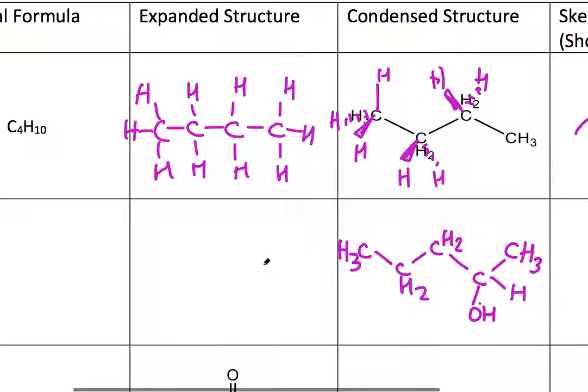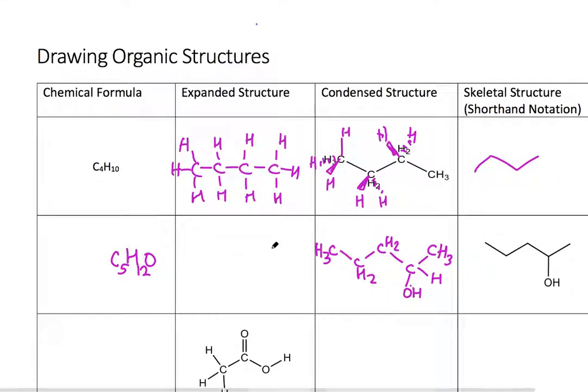And the chemical formula is C. We go in alphabetical order usually, so C, then H, then O. And then there's 1, 2, 3, 4, 5 C's, 1, 2, 3, 4, 5, 6, 7, 8, 9, 10, 11, 12 H's, and 1 O. So instead of putting 1, we just leave it. So C5H12O.